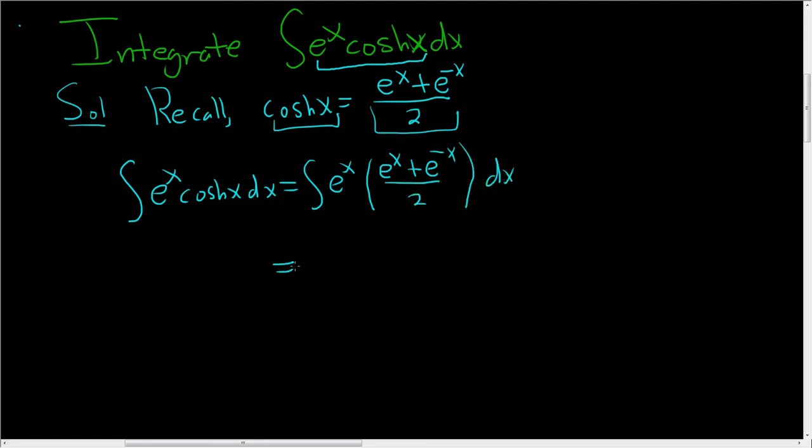This is equal to one half here. Let's pull it outside. So one half, and let's see, e to the x times e to the x. Well, that's e to the x plus x. That's just e to the 2x. So this will be e to the 2x